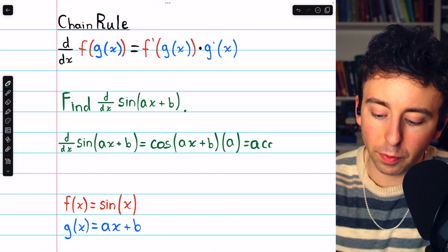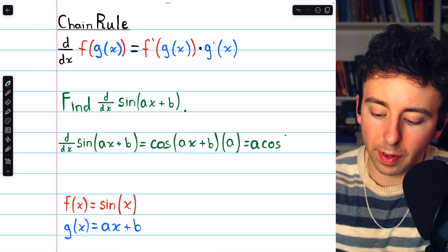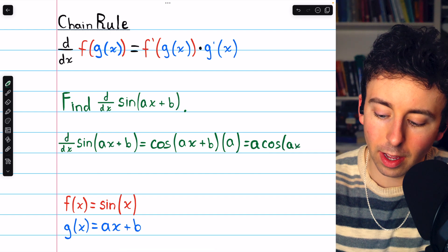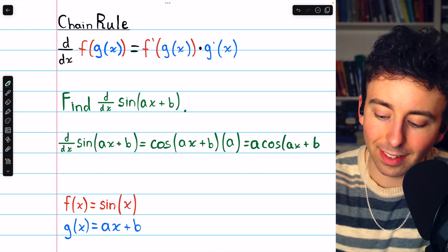Finally, we prefer to write this with the coefficient a first. So a times cosine of ax plus b. That's the derivative.